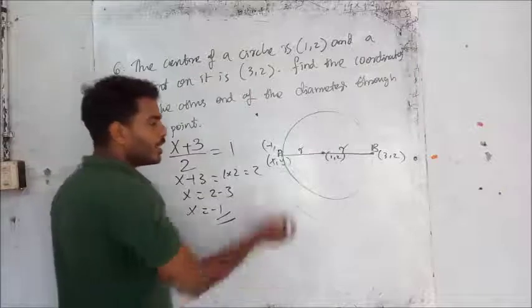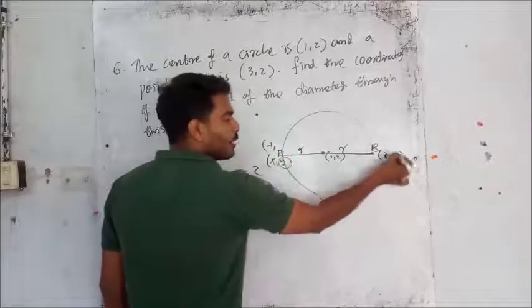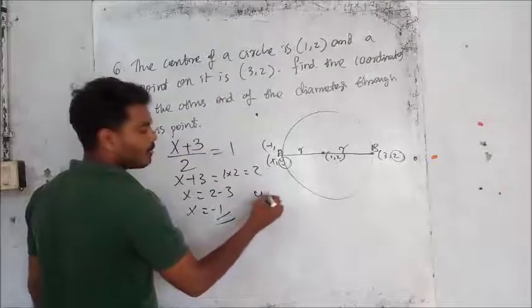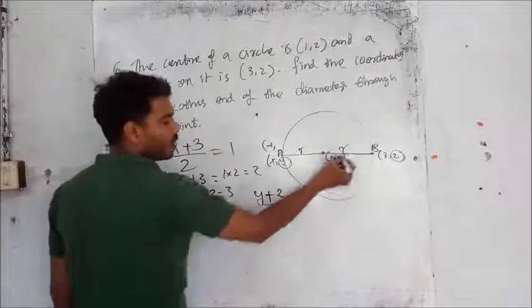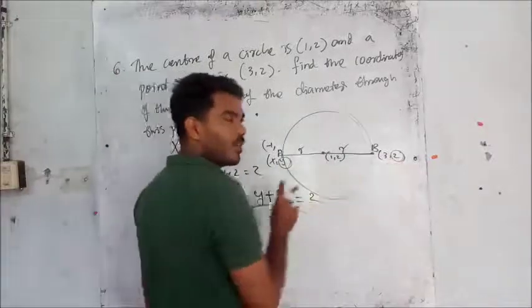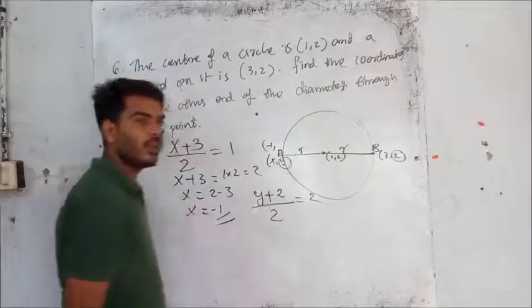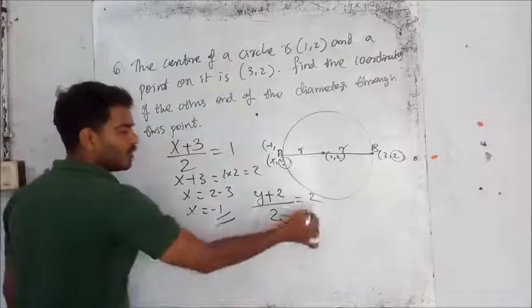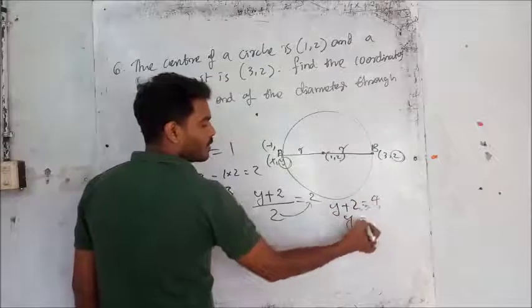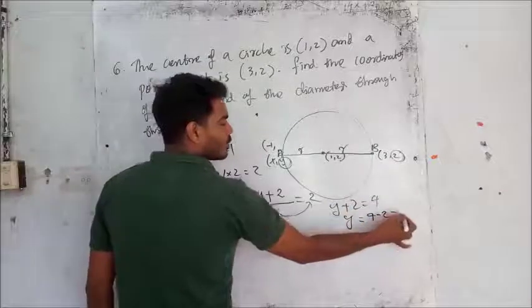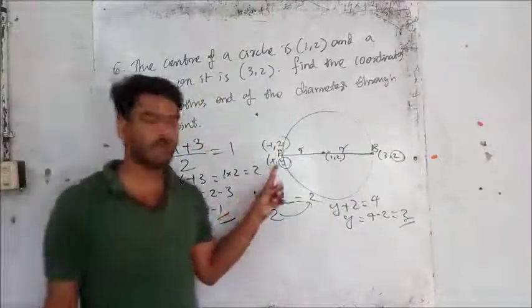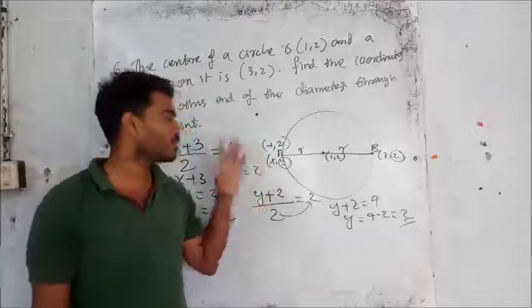Now we have to do the second value. y plus 2 divided by 2 is equal to 2. Second value plus 2 divided by 2 is equal to 2, so y plus 2 is equal to 4, y is equal to 2. So y plus 2... x plus 2 is equal to 2, so the answer is minus 1 and 2.